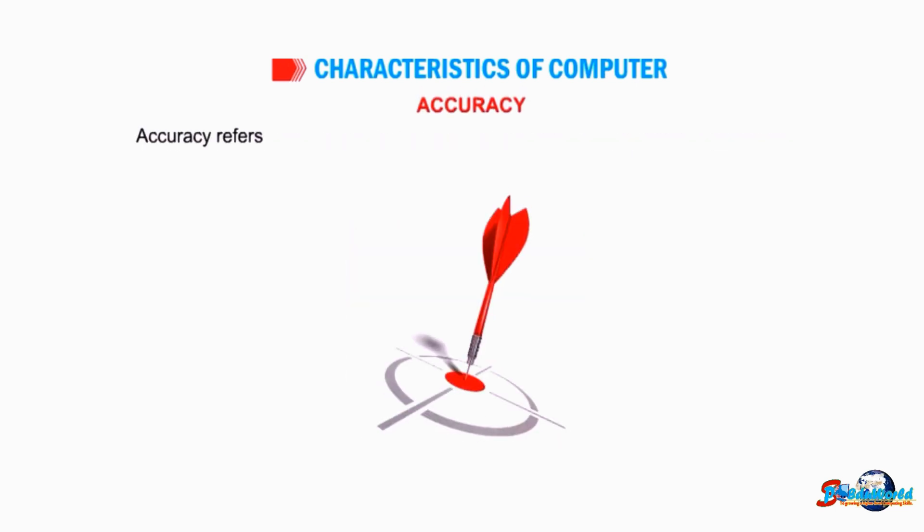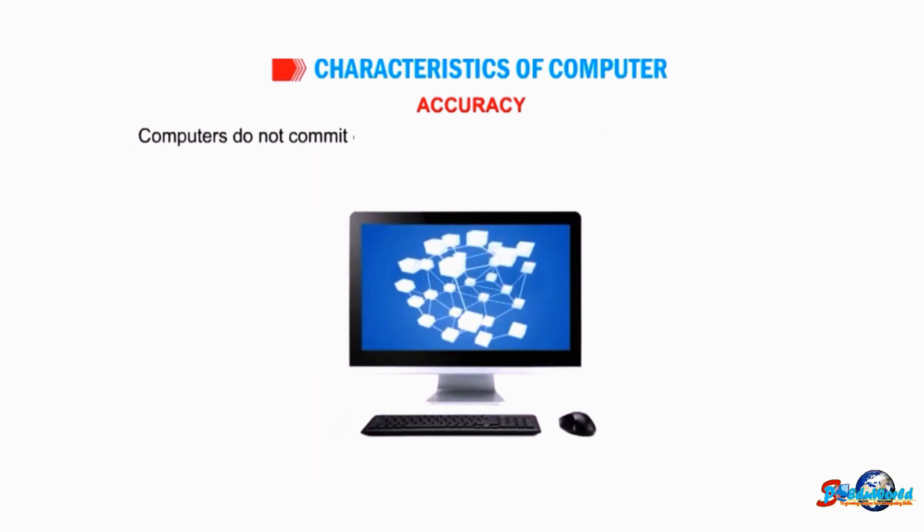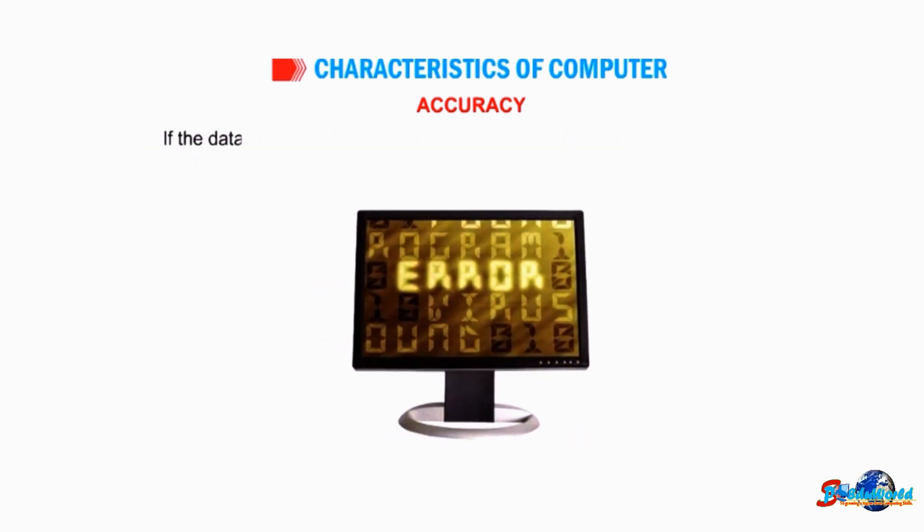Accuracy refers to the degree of perfection of operations performed by a computer. Computers do not commit errors and are capable of handling complex instructions accurately. If the data fed into a computer is wrong, it may produce an inaccurate result.